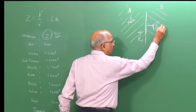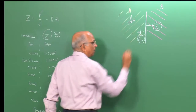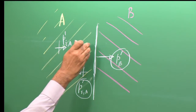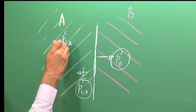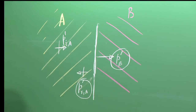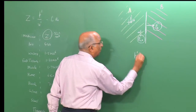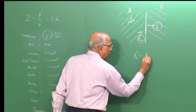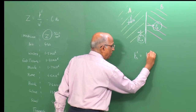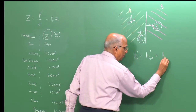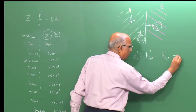I want to determine p_b and the reflected value p_ra. The net pressure p_b prime at the interface equals the sum of incident and reflected pressures, because at this interface both contribute: p_b prime = p_ia prime + p_ra prime. This is equation 1.